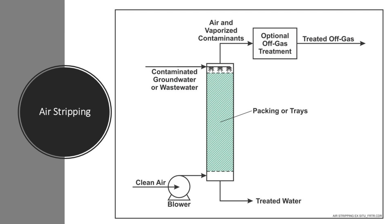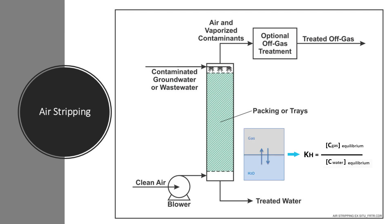The fundamental principle behind air stripping is the difference in volatility between water and VOCs. Volatility refers to how easily a compound transitions from a liquid phase to a gaseous phase. VOCs have a high volatility, meaning they evaporate readily when exposed to air. Air stripping leverages this property through a process called mass transfer, where VOCs move from the contaminated water into the air. This transfer is driven by Henry's Law, which states that the amount of gas that dissolves in a liquid is proportional to its partial pressure in the gas phase. By introducing large volumes of air to contaminated water, the partial pressure difference encourages VOCs to volatilize out of the water and into the air.